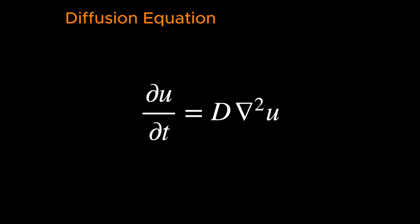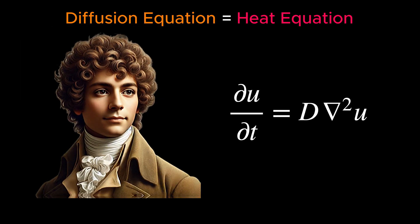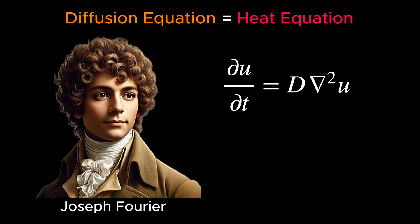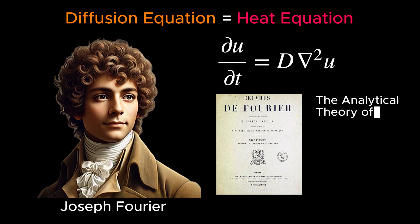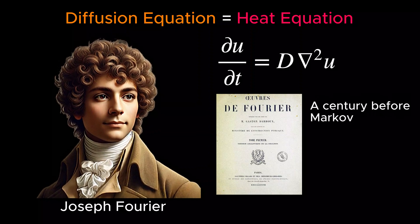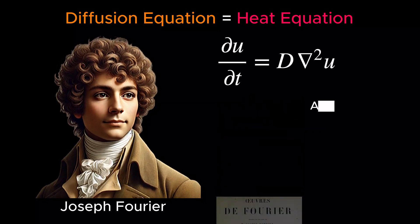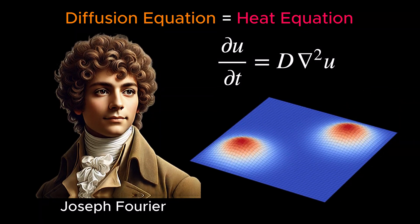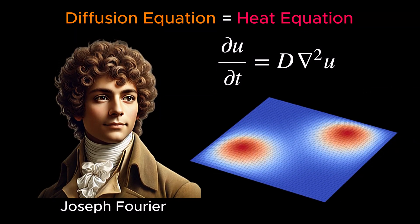To be fair in giving credits, we need to mention that the diffusion equation, also known as the heat equation in its original context, was first formulated by mathematician and physicist Joseph Fourier in his seminal work, The Analytical Theory of Heat, published in 1822, almost a century before Markov published his work.